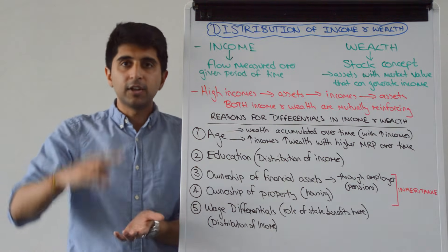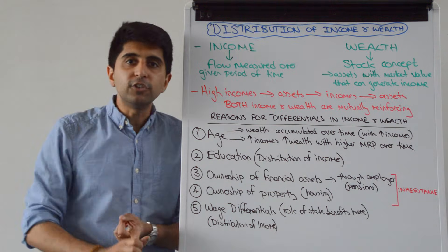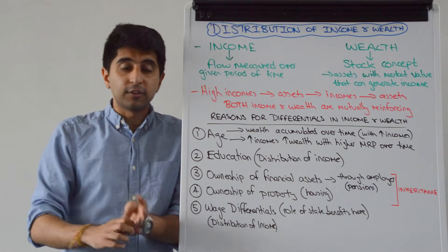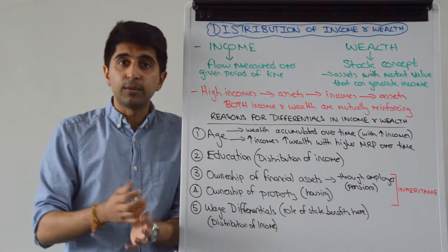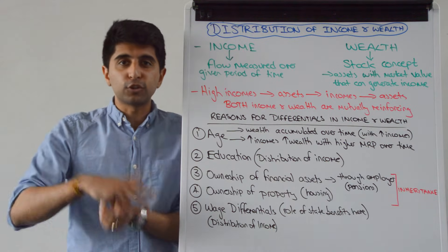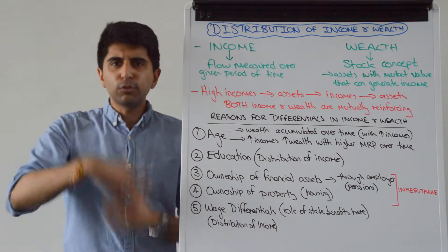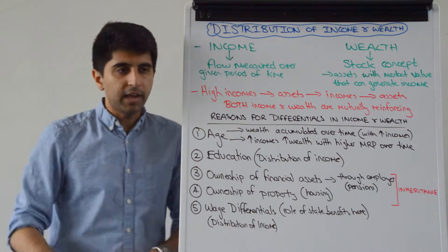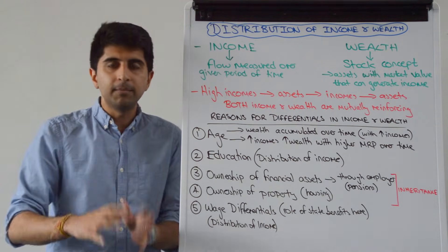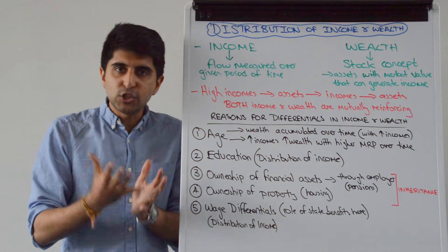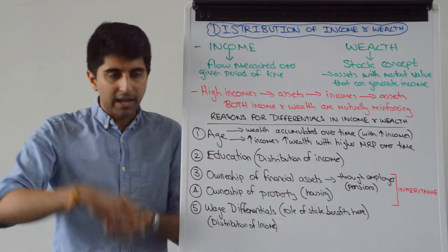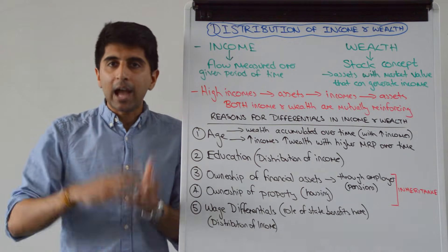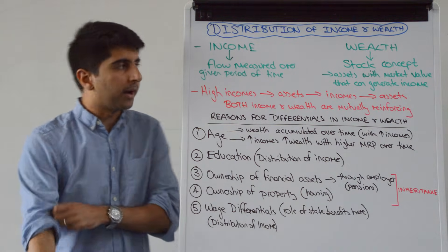Let's look at examples: things like pensions, stocks, shares, houses, derivatives, government bonds, gold. These are all things you can buy which generate income, and when you buy them you are adding to your wealth. So at a given point in time you can definitively say how wealthy you are.